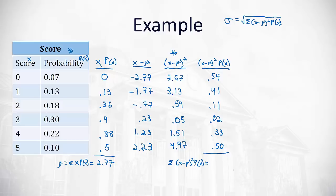So 0.54 plus 0.41 plus 0.11 plus 0.02 plus 0.33 plus 0.5 gives us 1.91.